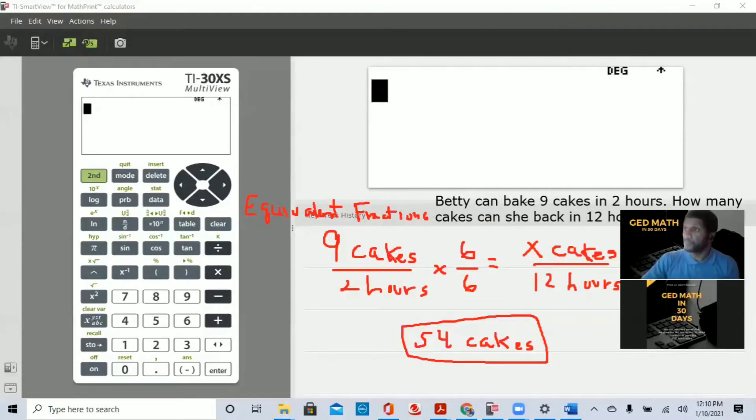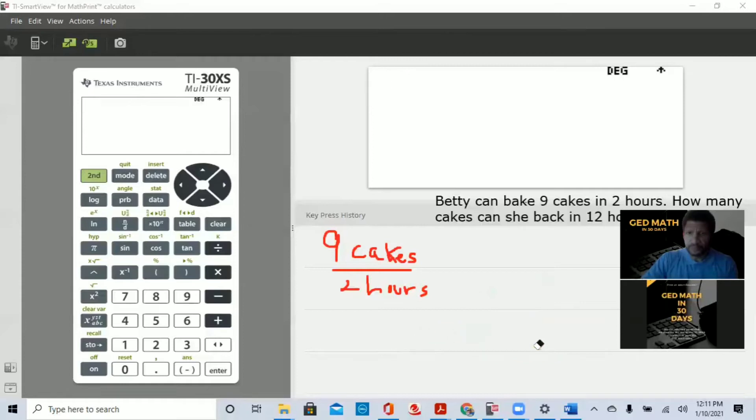The second way I want to go over is unit rate. So I'm going to erase this here. So again, we start with the ratio we know, cakes over hours. Nine cakes every two hours. So all we're going to do is do the computation. So nine divided by two is 4.5 cakes per hour.